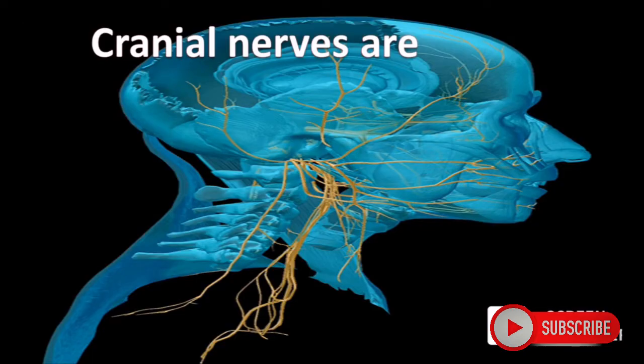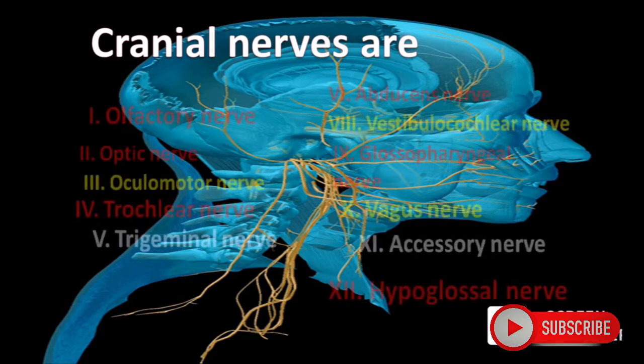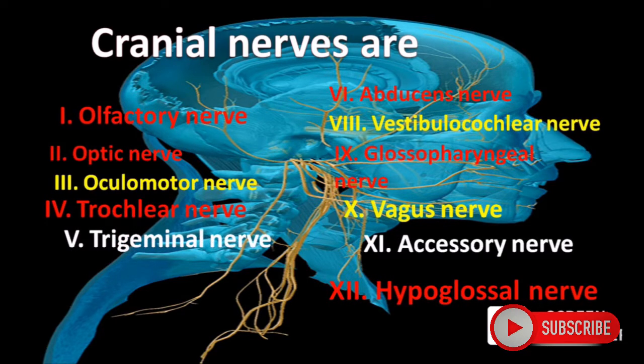Cranial nerves are: olfactory nerve, optic nerve, oculomotor nerve, trochlear nerve, trigeminal nerve, abducens nerve, vestibular nerve, glossopharyngeal nerve, vagus nerve, accessory nerve, and hypoglossal nerve. They originate from or are controlled by the brain, and mostly remain associated with different sense organs.